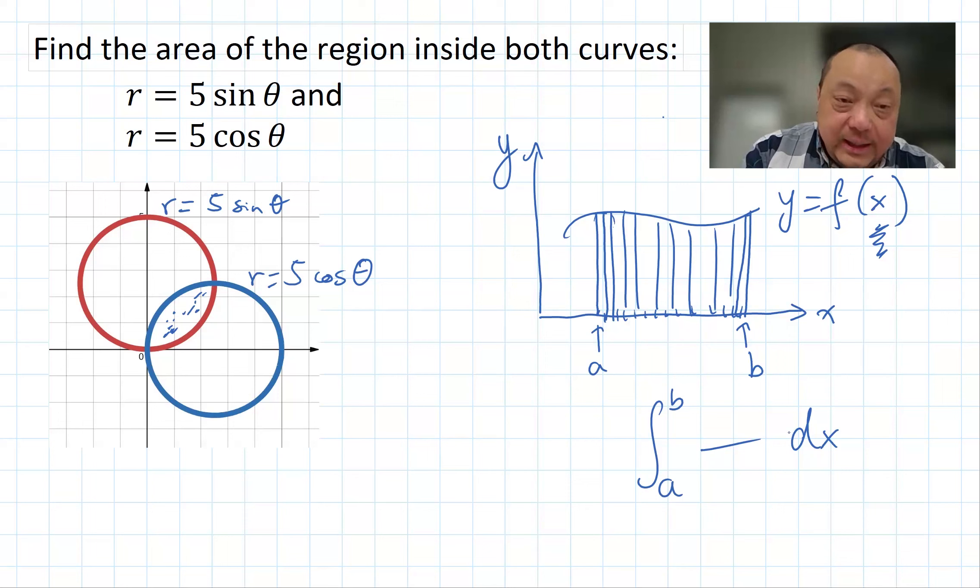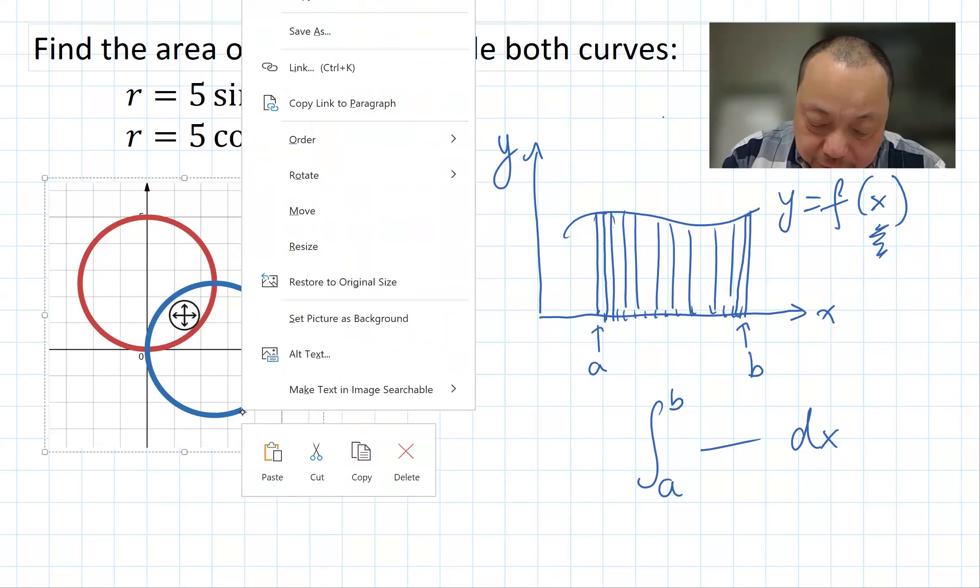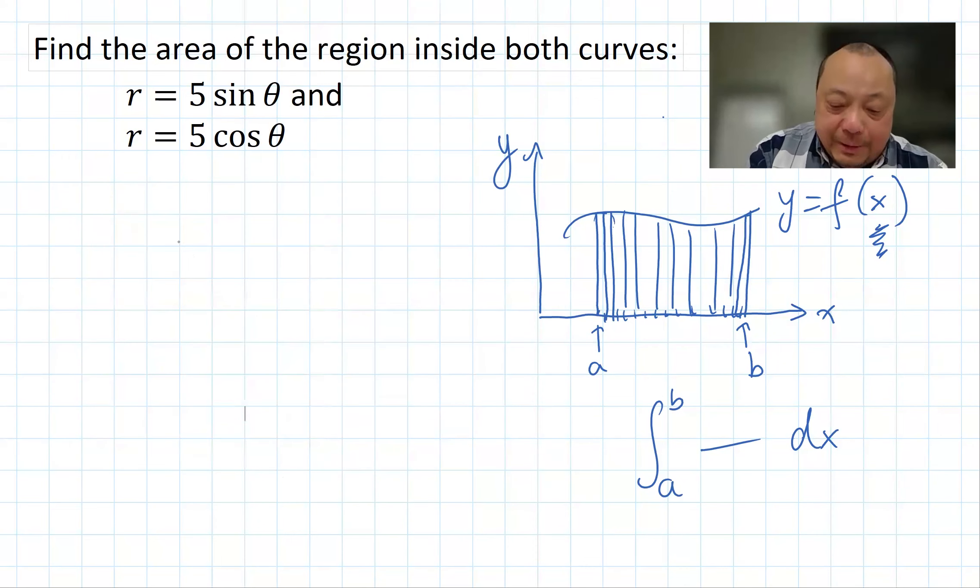And we add them together from the first rectangle at A to the last rectangle at B, and you have an integral from A to B of f(x) dx. That is in rectangular coordinates. Now what happens in polar coordinates?